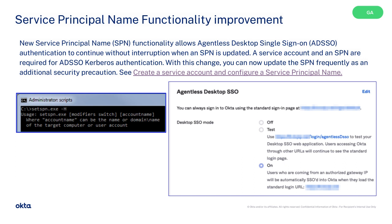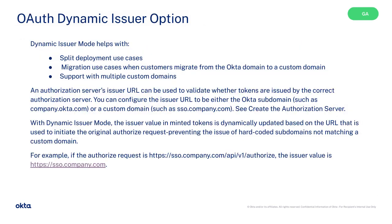A service account and an SPN are required for ADSSO Kerberos authentication. With this change, you can now update the SPN frequently. OAuth's dynamic issuer mode helps with split deployment use cases, migration use cases when customers migrate from the Okta domain to a custom domain, and support with multiple custom domains. An authorization server's issuer URL can be used to validate whether tokens are issued by the correct authorization server. You can configure the issuer URL to be either the Okta subdomain or a custom domain. See Create the Authorization Server.